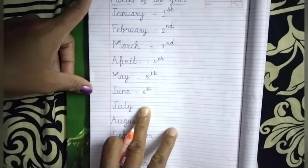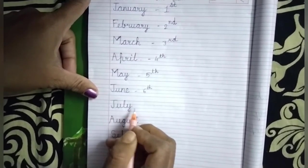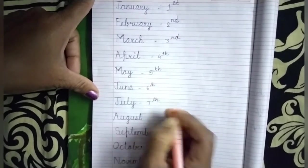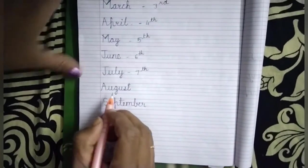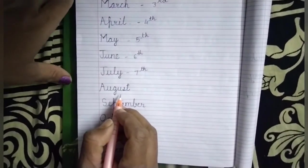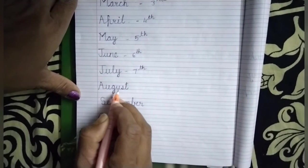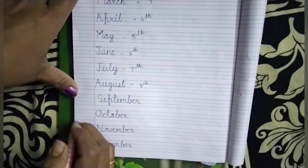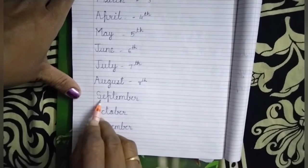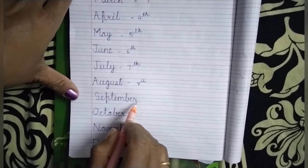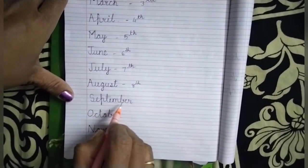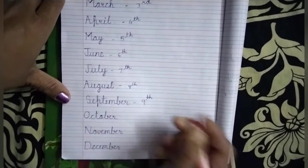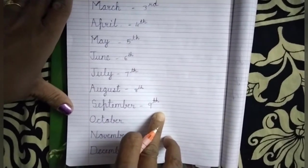The next month is J-U-L-Y, July. And July is our seventh month of the year. The next is A-U-G-U-S-T, August. And August is our eighth month of the year. The next is S-E-P-T-E-M-B-E-R, September. And September is our ninth month of the year.